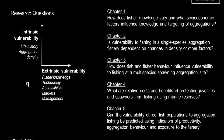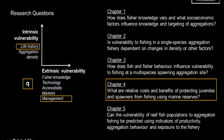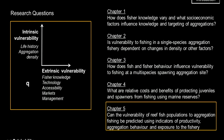Coming back to my research questions — I've populated the framework with the indicators discussed. In chapters 1, 2, and 3, I'm exploring how aggregation density and extrinsic indicators influence catchability. In chapter 4, which I don't have time to present today, I show that catchability — specifically the ratio of catchability from spawning to non-spawning sites — has a major influence on marine reserve outcomes, more so than life history or sex change. In chapter 5, I present preliminary results bringing everything together and assessing a global set of spawning aggregation fisheries using expert interviews.